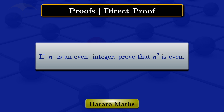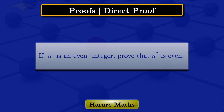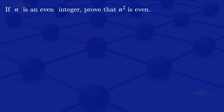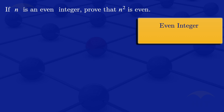If n is an even integer, in this video I'm going to prove that n squared is even. An integer is said to be even if we can write it in the form 2 times k, where k is an integer. So in this case, we are given that n is an even integer, so we have n equals 2k, where k is an integer.